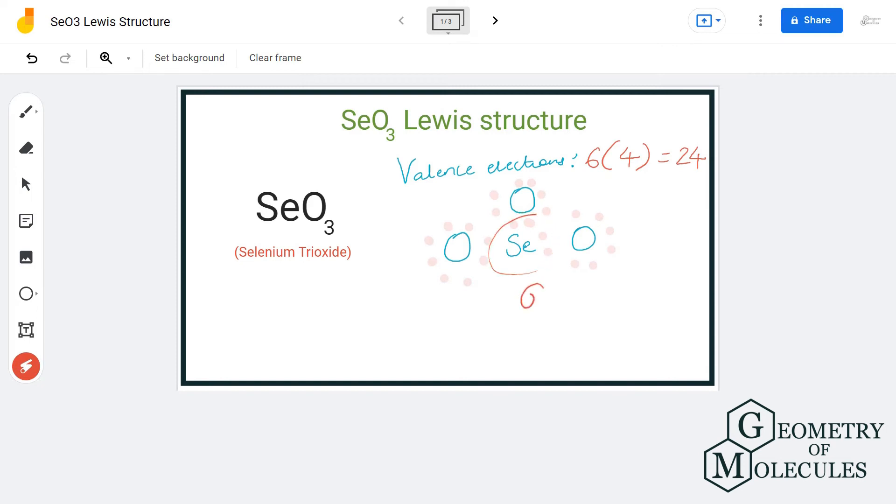However, selenium is an exception to the octet rule and can actually accommodate more than eight valence electrons. So instead of sharing just one pair of electrons from this oxygen atom, we are going to shift the pairs of electrons from each oxygen atom.